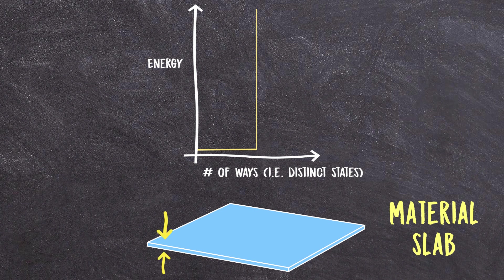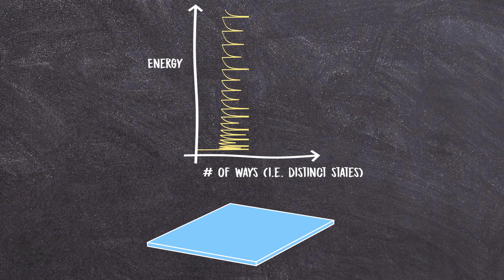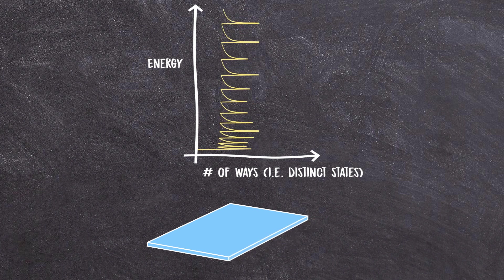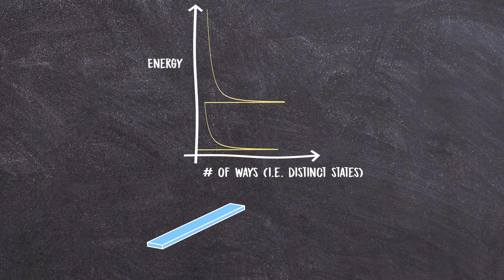We can actually take this further, and rather than thinning along one axis, we could start thinning on two, basically creating a very, very thin wire. And as we thin our already thin slab and make it more like a wire, this 2D density of states will start to split again, and this time into that of a one-dimensional universe.